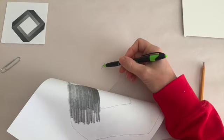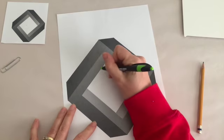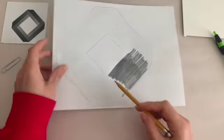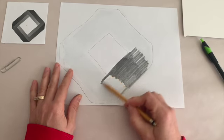I'm basically making a traceable. This is called graphite transfer, and you want to just go ahead and shade in the whole thing.